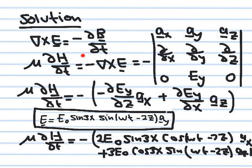We use Faraday's law in point form: curl E = −∂B/∂t. Since B = mu_0 * H (assuming free space, mu = mu_0, a constant), we can take it outside the differentiation. This gives: mu_0 * ∂H/∂t = −curl E. Now we expand curl E using the determinant with basis vectors ax, ay, az; partial derivatives ∂/∂x, ∂/∂y, ∂/∂z; and field components 0, Ey, 0 — since we only have the Ey component, which is a function of x, z, and t.